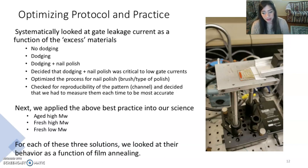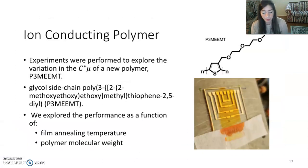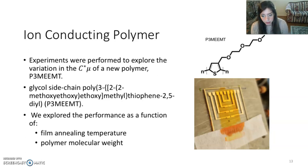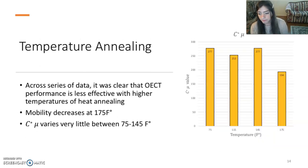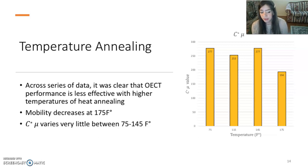Next, we applied the best practice to our science. We tested three solutions and looked at their behavior as a function of film annealing. We used a new polymer, P3MeEMT, and explored the performance as a function of film annealing and polymer molecular weight. Here is the data we obtained regarding annealing the chips at temperatures varying from 75 to 175 degrees Fahrenheit. Upon analysis, it was clear across many chips that mobility decreased at 175 degrees, and C*μ varies very little between the 75 to 145 degree range.